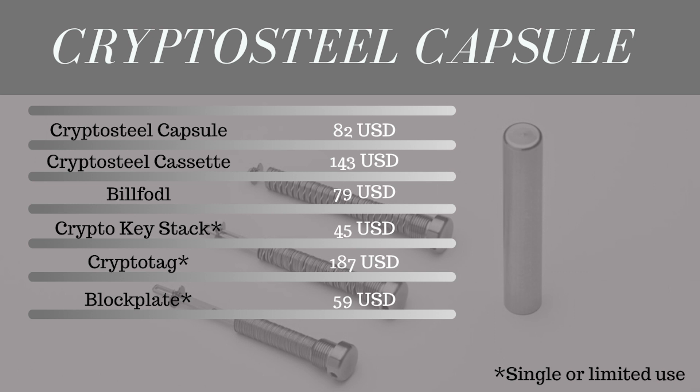On screen I've got a price comparison. The CryptoSteel cassette, the original, costs about $140 US. Billfodl does basically the same thing with different branding for $80. But the CryptoSteel Capsule, this small cylindrical device, costs about $80 as well — the same as Billfodl — and in my opinion it's a bit better, which I'll explain.